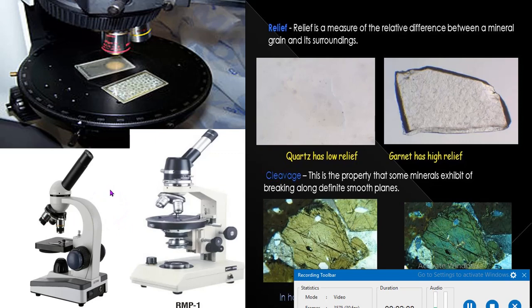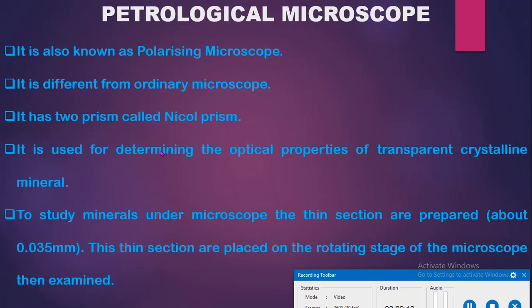It is also called a polarized microscope or polarizing microscope. It is a type of microscope used in which thin sections of minerals and rocks are studied. It differs from ordinary microscope as it has two prisms called Nicol prisms, and is used for determination of the optical properties of transparent crystalline minerals. Thin sections are prepared at about 0.035 millimeter and placed on the rotating stage for examination.